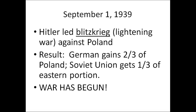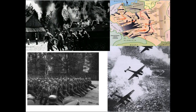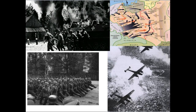What happens next is the blitzkrieg — the lightning war — against Poland on September 1st, 1939. Germany gains about two-thirds of Poland and the Soviet Union earns the eastern third, and World War Two has begun. The attack begins with bombers dropping bombs, paratroopers — a new tactic — then infantry marching through the streets, and then tanks following behind, attacking small villages and sweeping up into Poland.